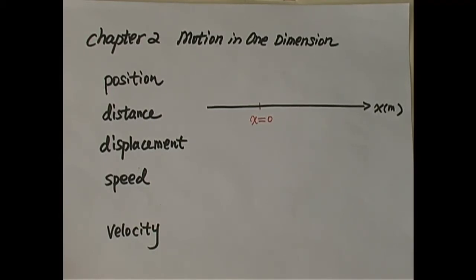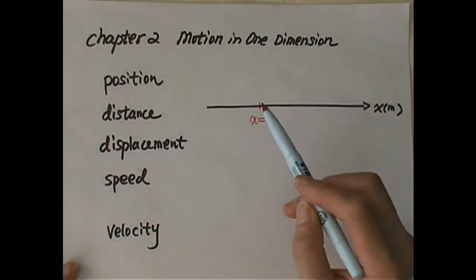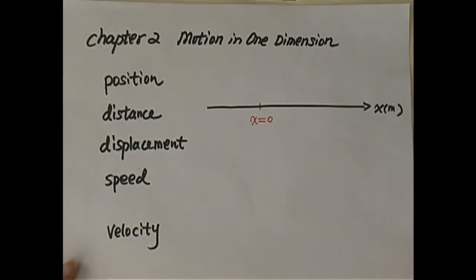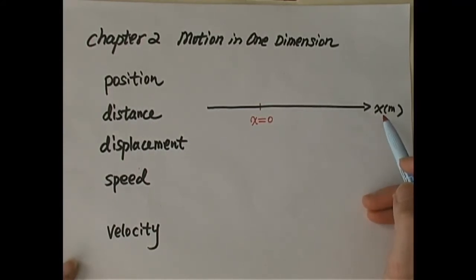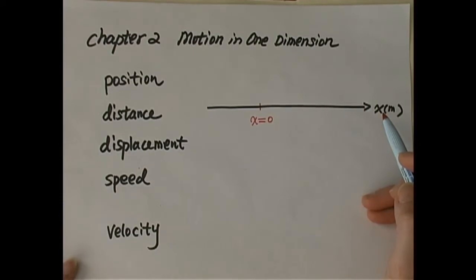For motion in one dimension, we just need an x-axis. We define the origin where x equals zero, and we have to define the positive direction — right now it's pointing to the right. You can choose to the right as positive, or for your convenience, you can also choose to the left as positive. If the motion is up and down — for example, if you drop something or toss something up — the motion is along the vertical direction, which we call the y-direction. You can either choose up or down as positive. Negative signs only represent direction.